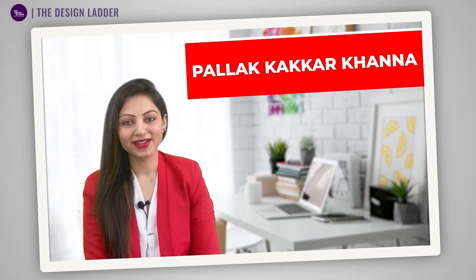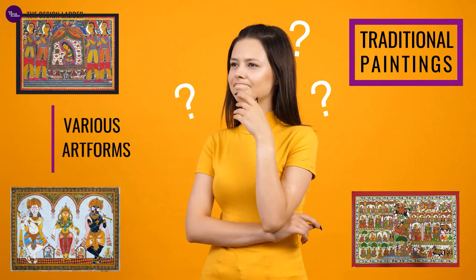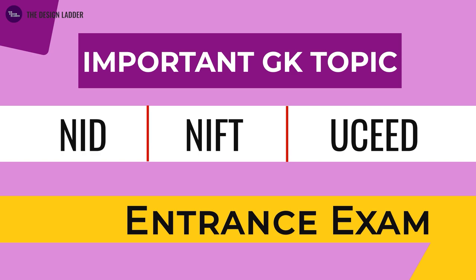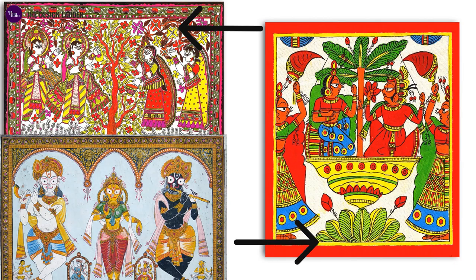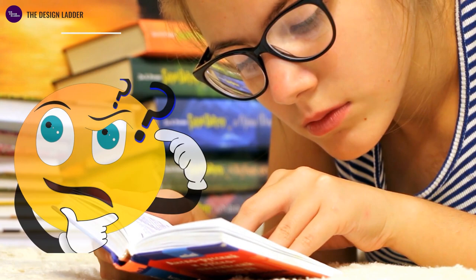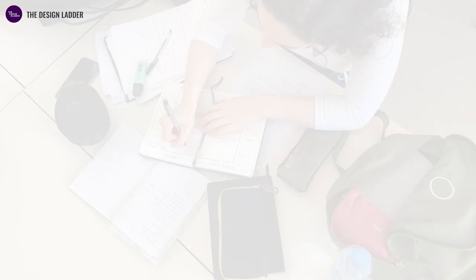Hi future designers! A lot of you are finding it really confusing to identify various painting styles in traditional art forms of India, as this is one of the most important GK questions for design entrance exams, where you are given a picture of a painting or an art form and you have to judge the style. All have similar human figures, animals, leaves, plants, trees, and a lot of similarities — we understand that these can be really overwhelming and confusing.